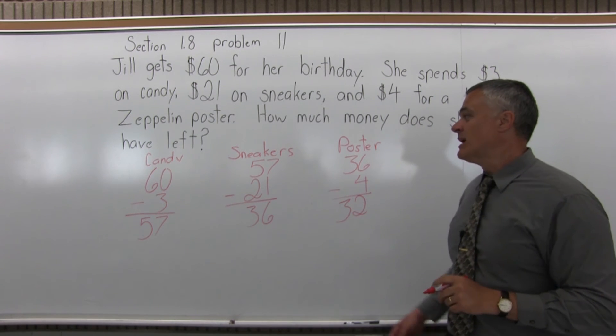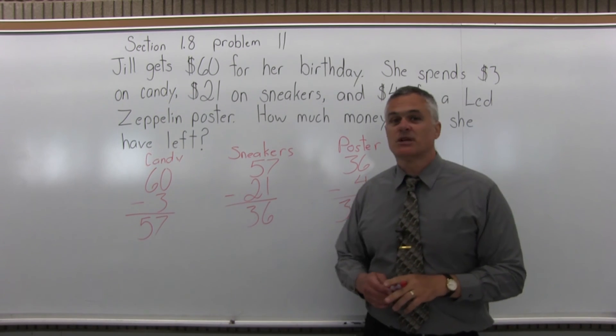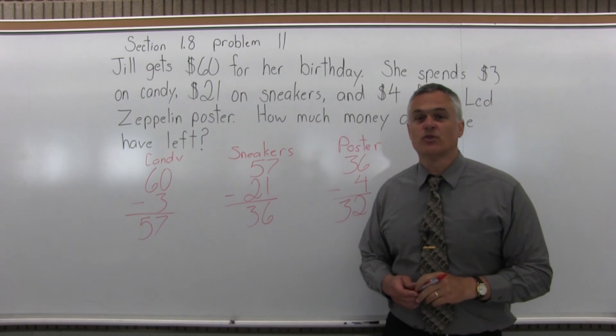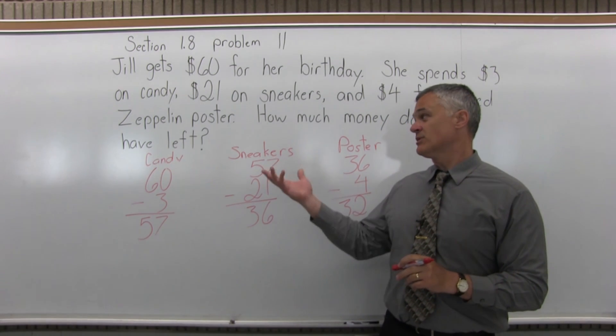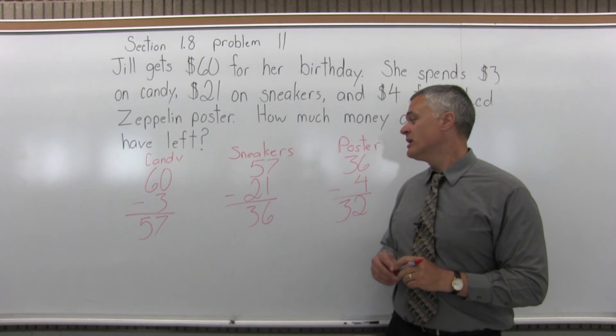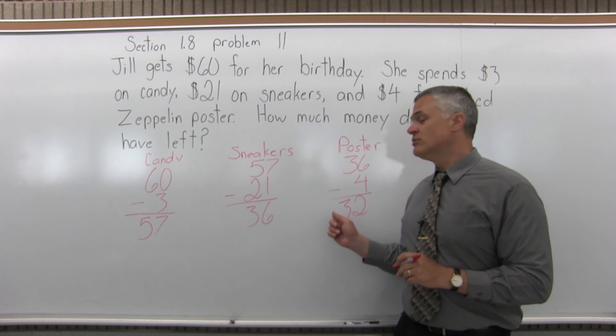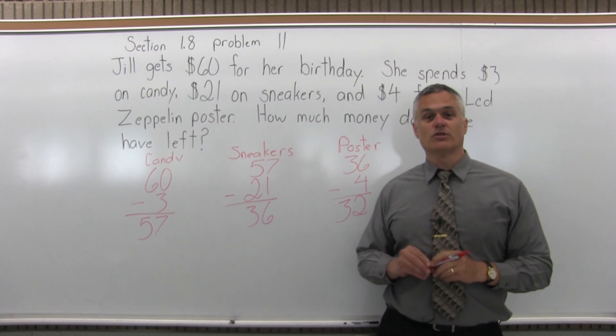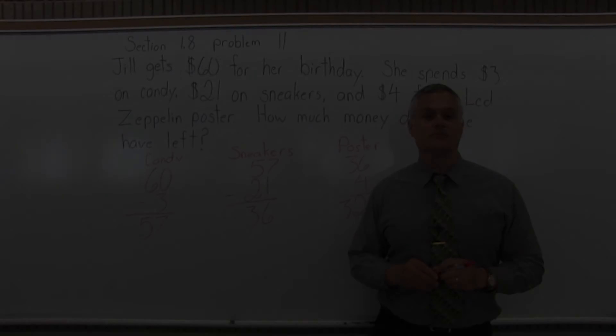So by the time Jill is done buying herself a few birthday presents with the money that she got, she is down to $32 remaining.